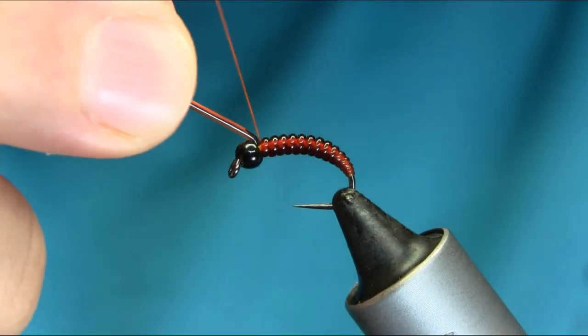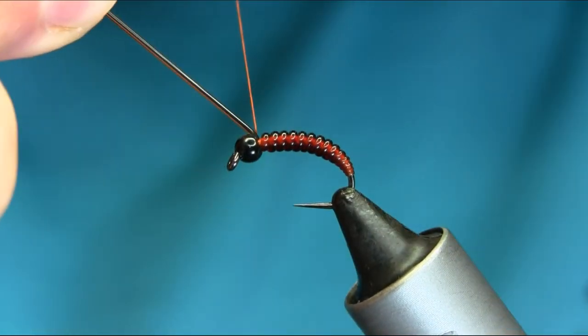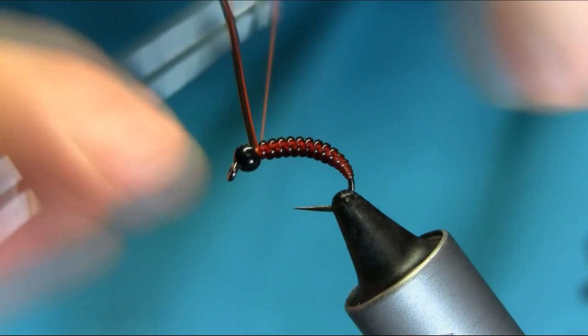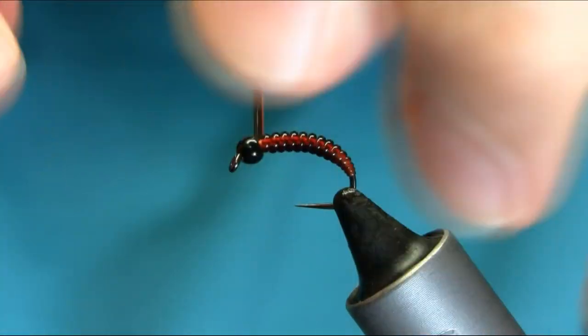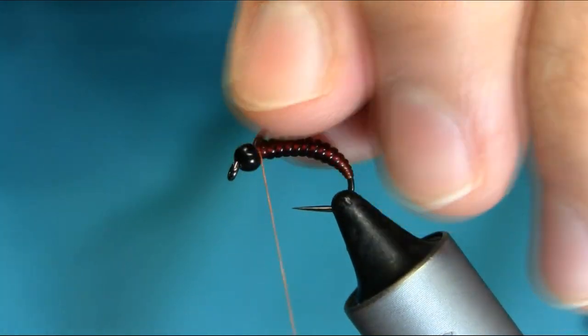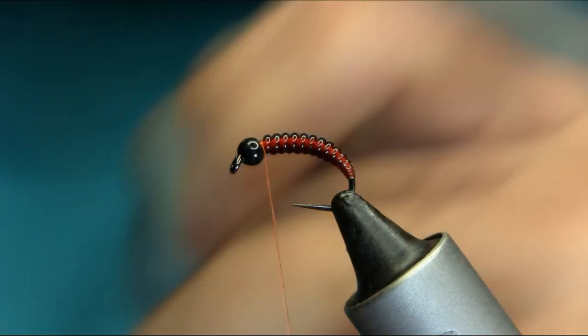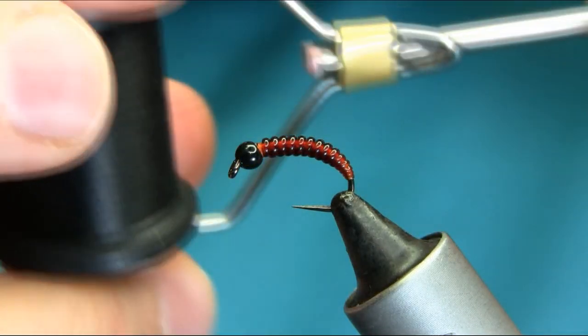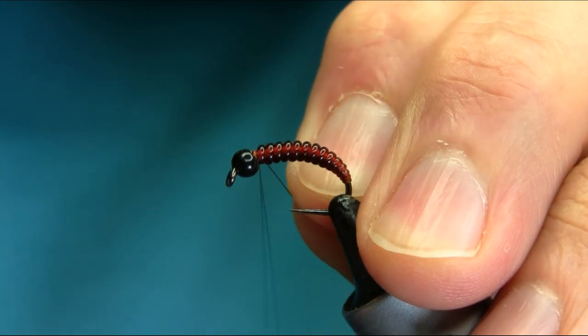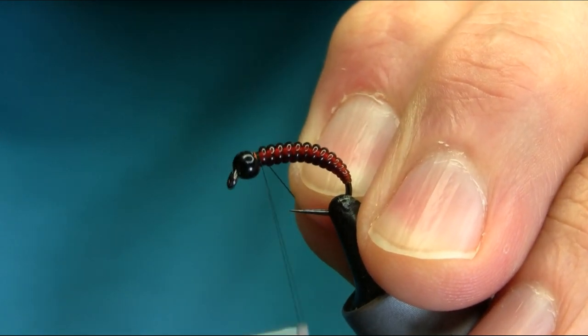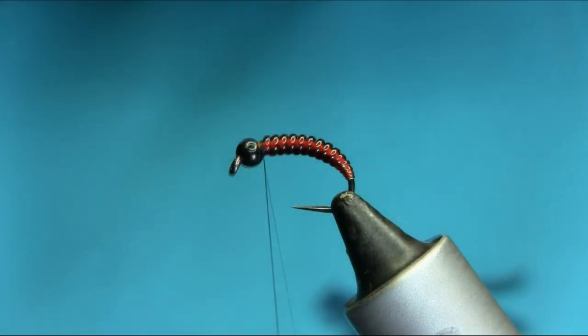Catch that here. Secure this properly and just take away this extra piece. The next thread I'm using is black auto because the head is black, so it's much better using the black thread. For the legs, I'm using a brown partridge feather.